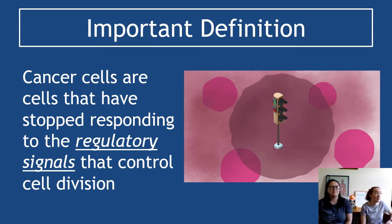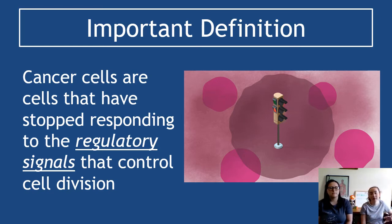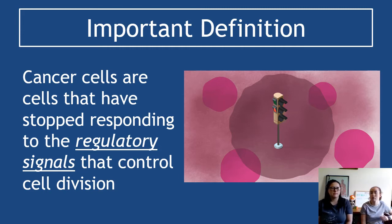Here is a really important definition you need to know word for word: cancer cells are cells that stop responding to regulatory signals that control cell division. The signals that normally tell your body cells to start or stop dividing — cancer cells don't respond to them. It's like constantly running a red light. Get that definition down as a flashcard.